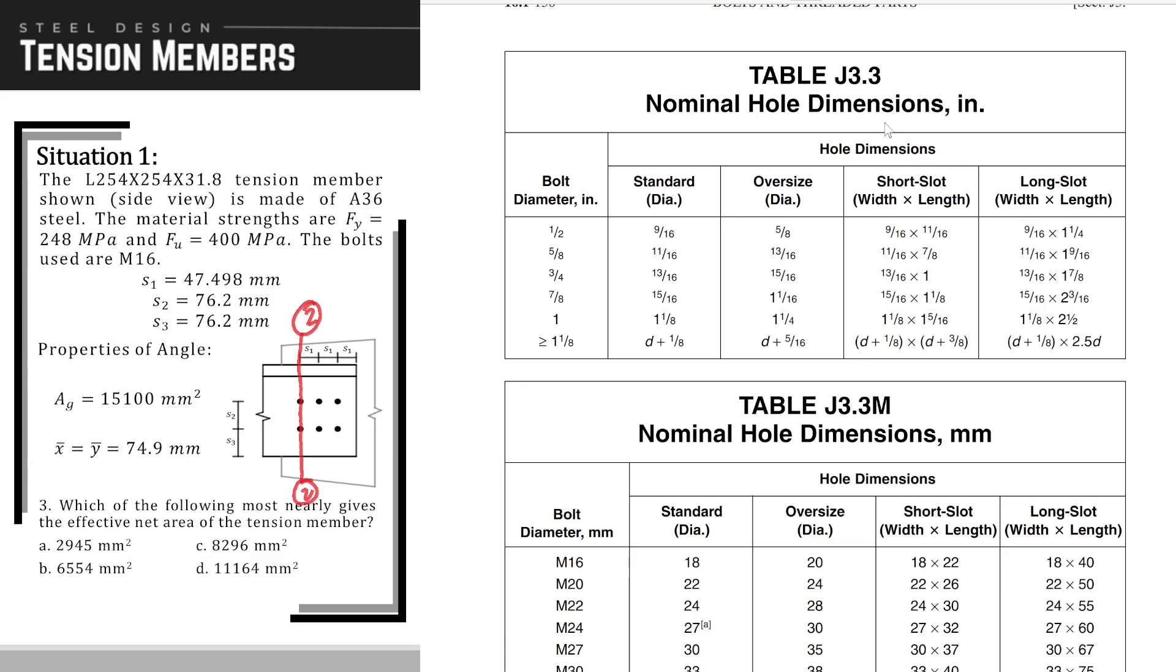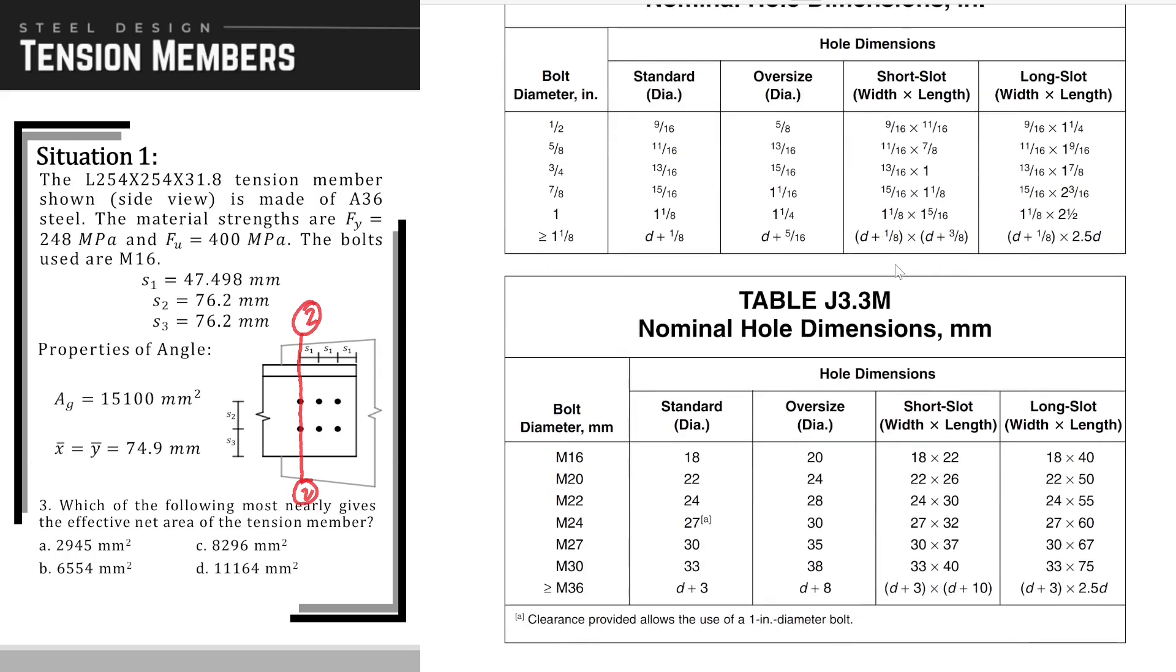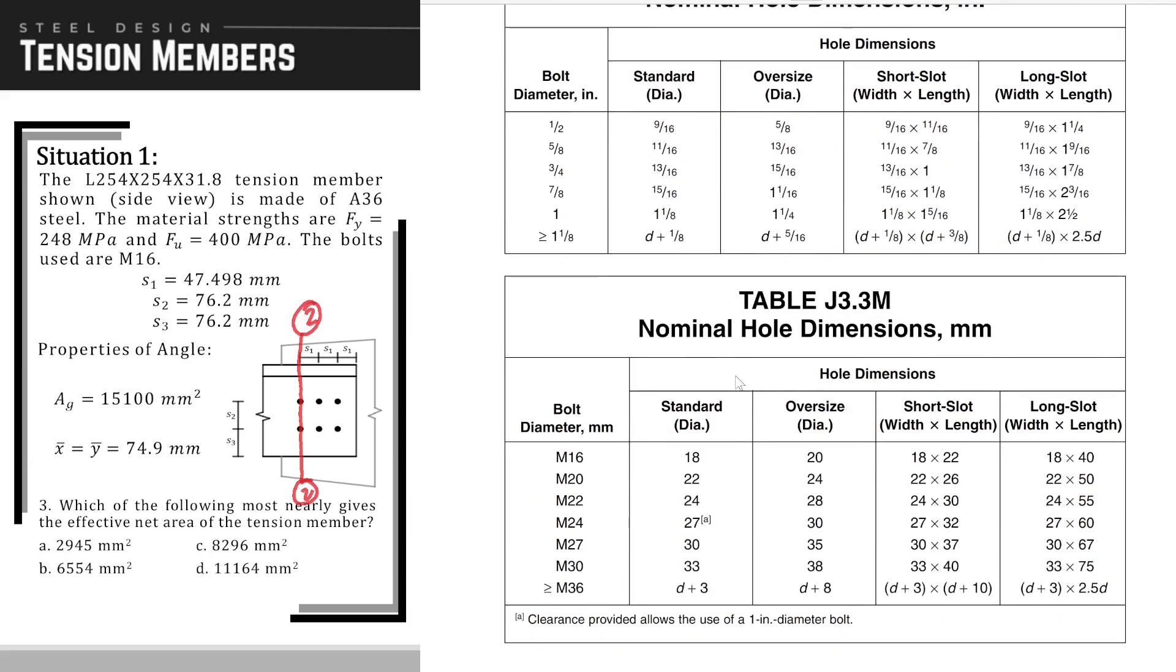We will get the standard hole size from the table. We will see in table J3.3, the nominal hole dimensions. So we use this table J3.3 if we have the problem in English units. The unit for this bolt diameter and hole dimensions are all in inches. And if our problem is in SI units, like in our case, in the case of our problem.